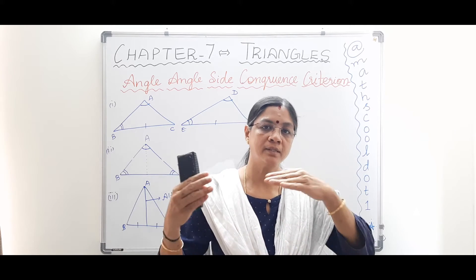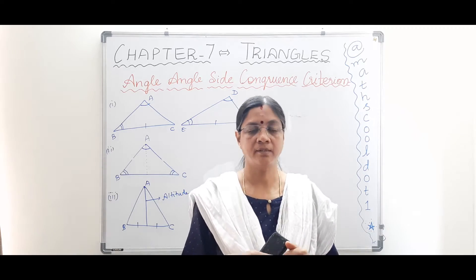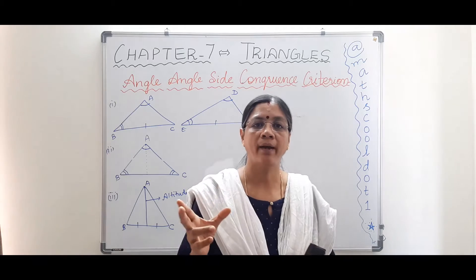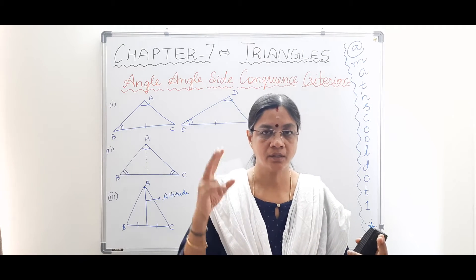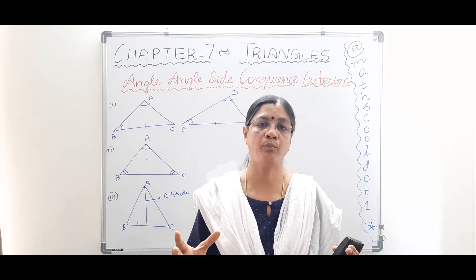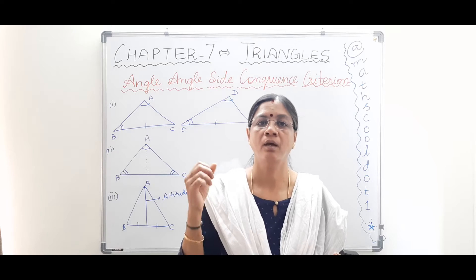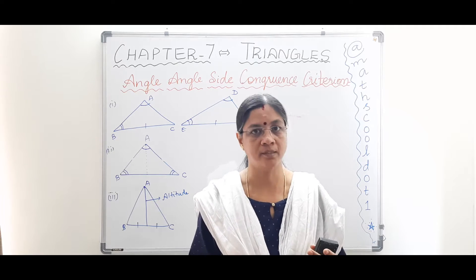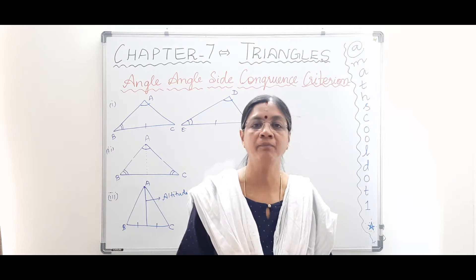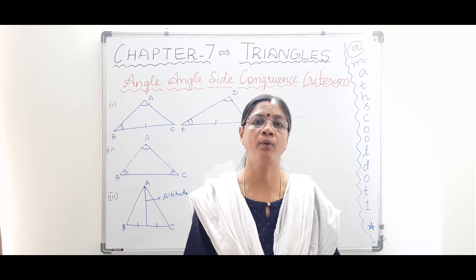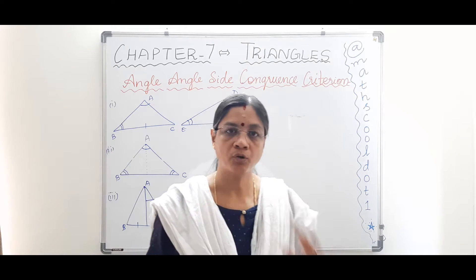The previous ones were two angles and the side in between — two sides and the angle enclosed between them. Angle-Angle-Side means two angles and one side, where the side is not enclosed within those two angles. This makes it easier than the previous ones, because you need not look for a specific pattern — just spot two angles and one side separately.